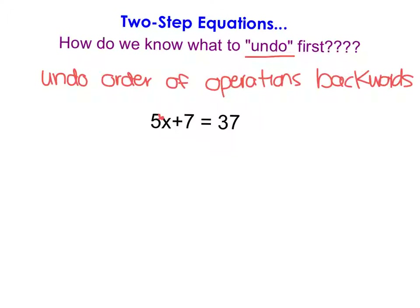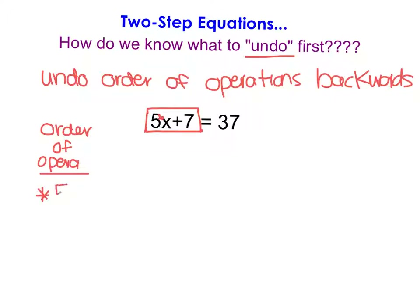What I suggest you do is focus just on the side with the variable — I've outlined that in red. Going through the order of operations on just that boxed portion, I have a multiplication and an addition. With the order of operations, the multiplication of 5 would come first: I would multiply x by 5, and then add the 7 second. That's the order of operations for that expression on the right-hand side.